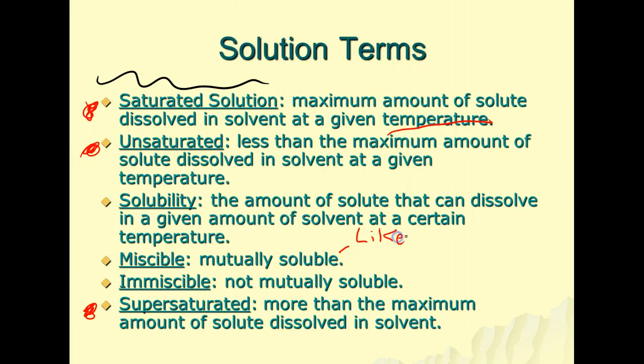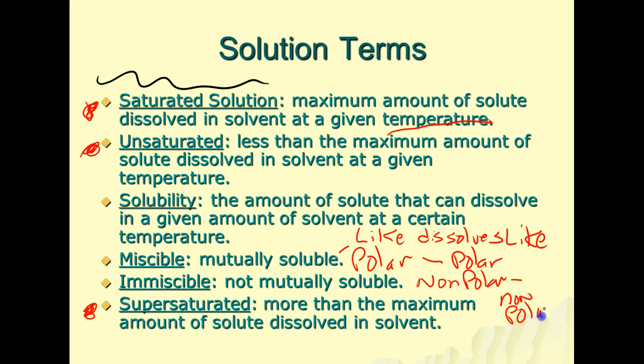What this means is like dissolves like. So polar molecules dissolve polar molecules, nonpolar molecules dissolve nonpolar molecules. If we look at oil and water, oil is a nonpolar molecule, water is a polar molecule, hence they're not mutually soluble—they're immiscible. But if we have something like water and vinegar, both are polar molecules so they're mutually soluble. This is the reason why gasoline or oil floats on top of water when it rains, or why in salad dressing the oil sits on top of the vinegar.